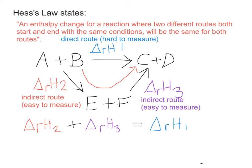So if you can measure the delta T value for these two but you can't measure the delta T value for this one, then you can work out delta RH1 by adding them up. So it's like a shortcut by going a slightly different route from your reactants to your products.